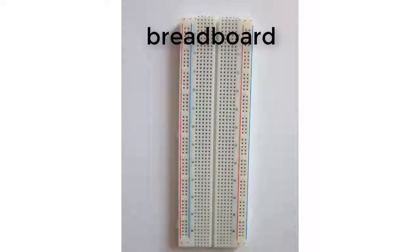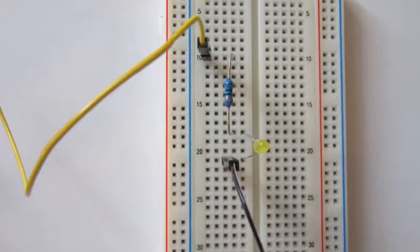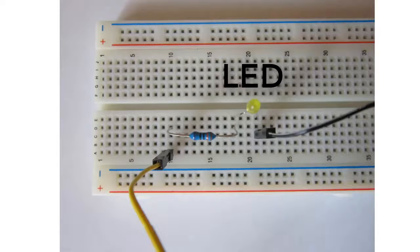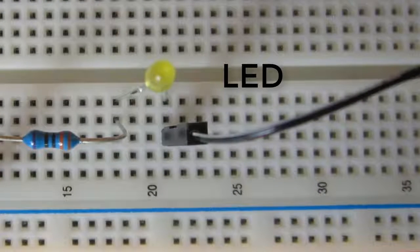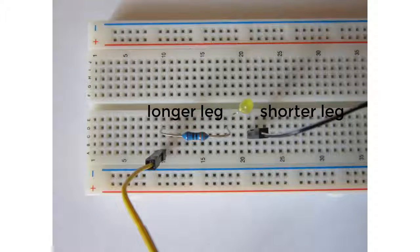Now I'm going to explain in detail how the circuit is built. Let's start with the LED. An LED has always a longer and a shorter leg. The longer leg is called anode and is positive. The shorter leg is called cathode and is negative. Plug in the LED according to the picture.